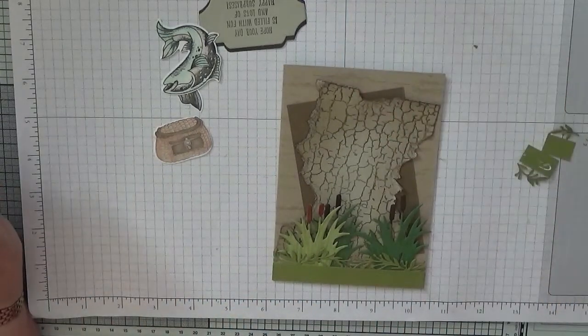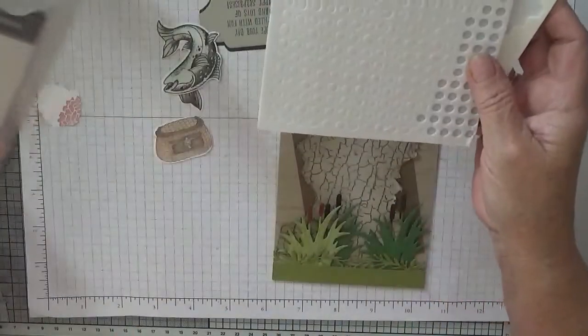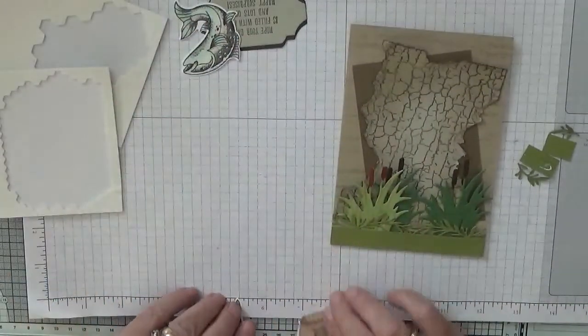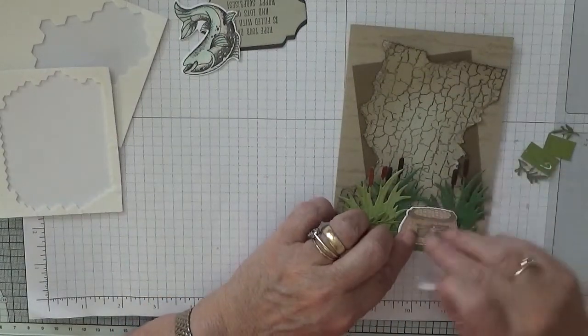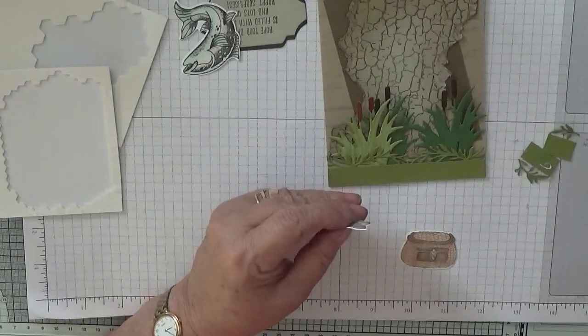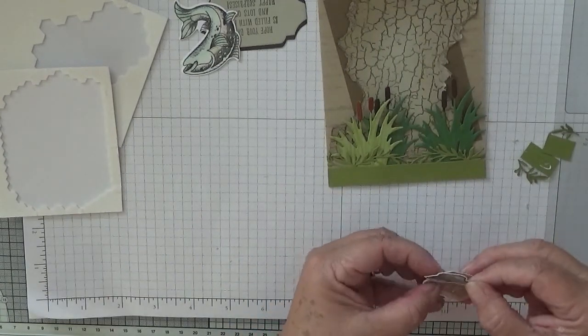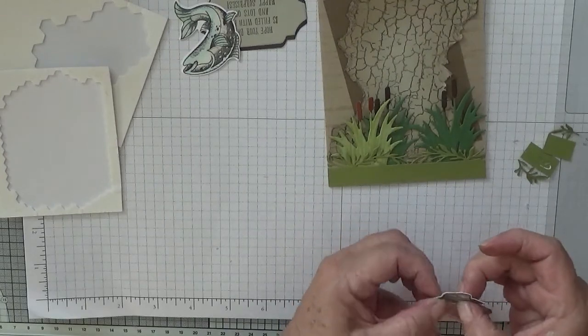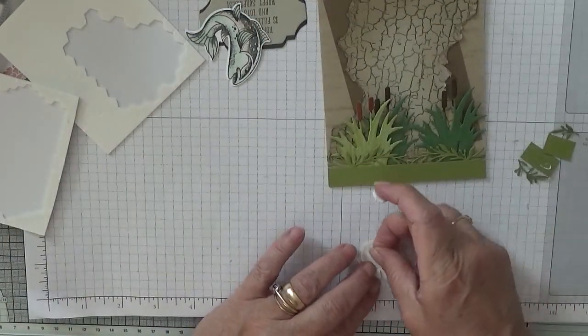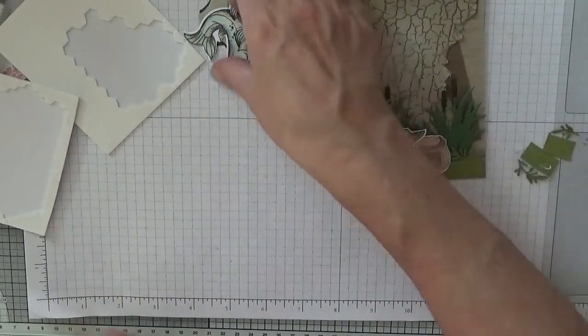Now we need dimensionals. I stamped that sentiment, and I'll add dimensionals to it. I did glue the hat onto the corner. And then we'll stick three dimensionals, so one up there, one there, and one there. And that will go there. Next the fish.